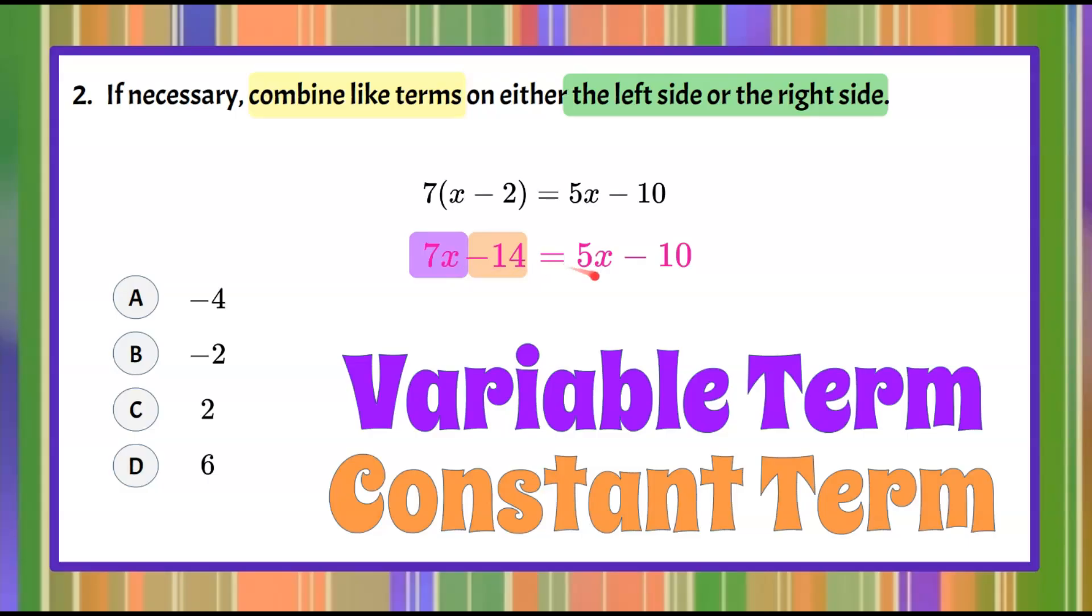Let's look at the right. So we have a variable term here and we have a constant term negative 10. So again these are not like terms. We have one of each variable and constant term so therefore there's nothing to do here and step two is not necessary.